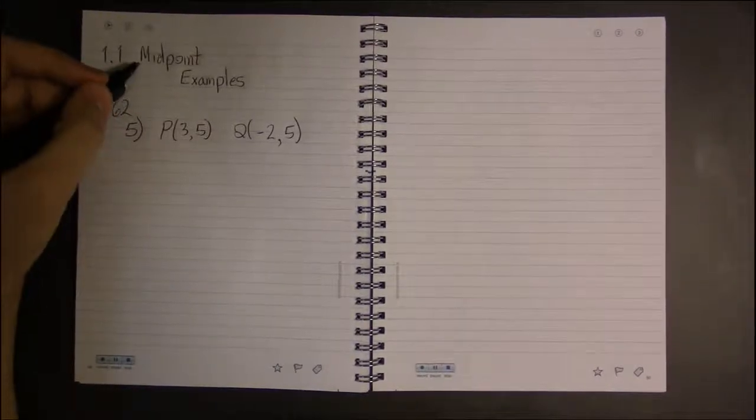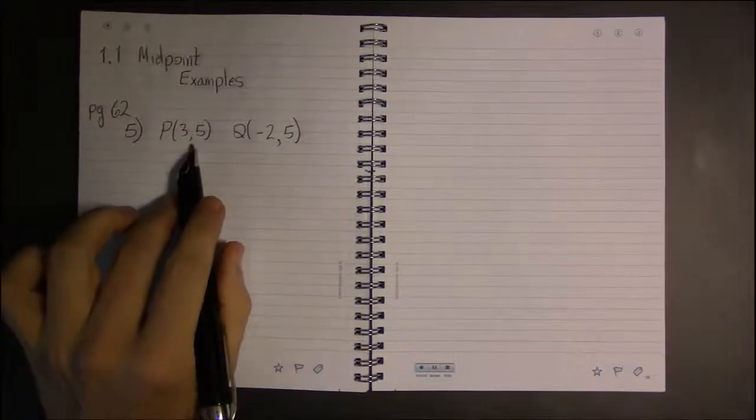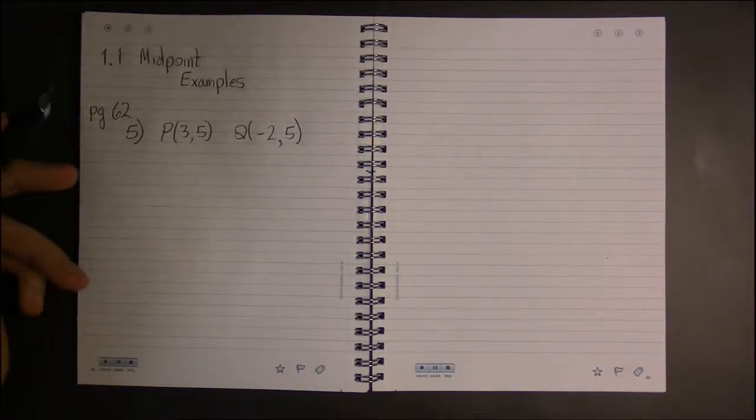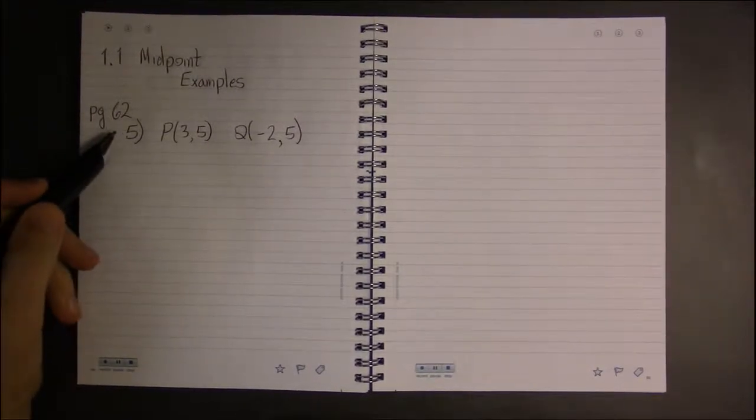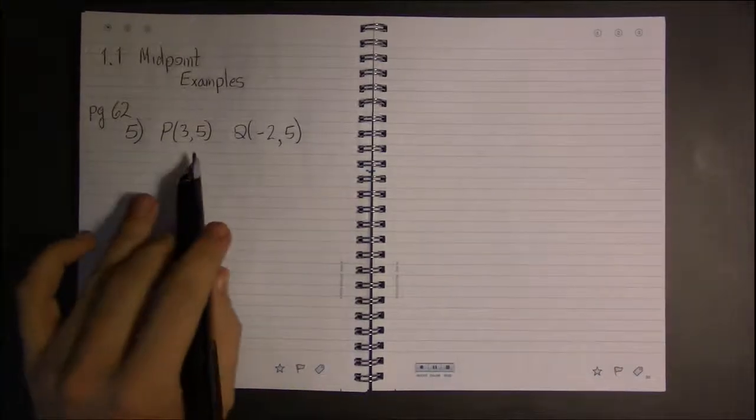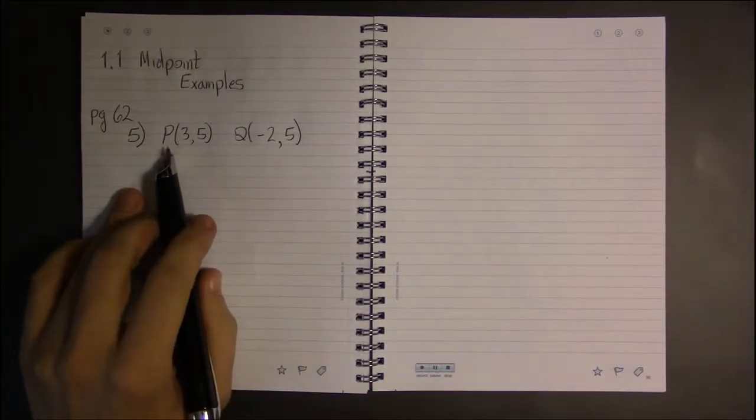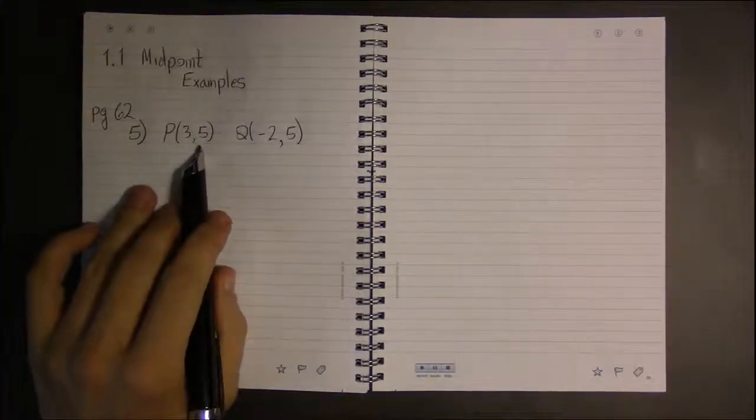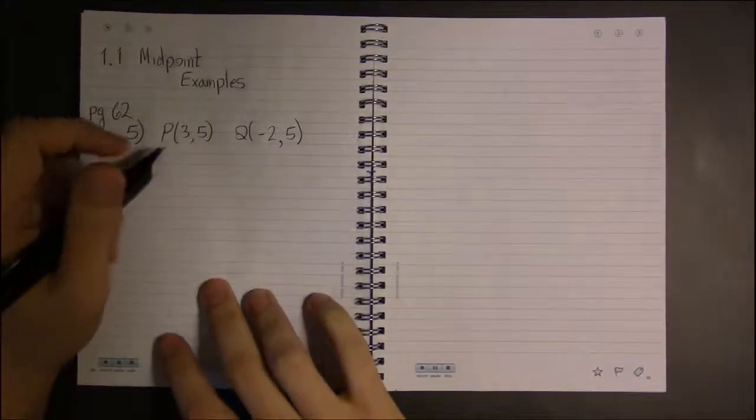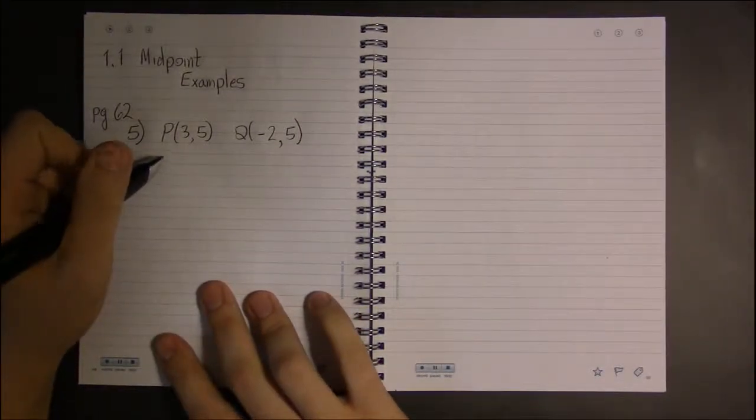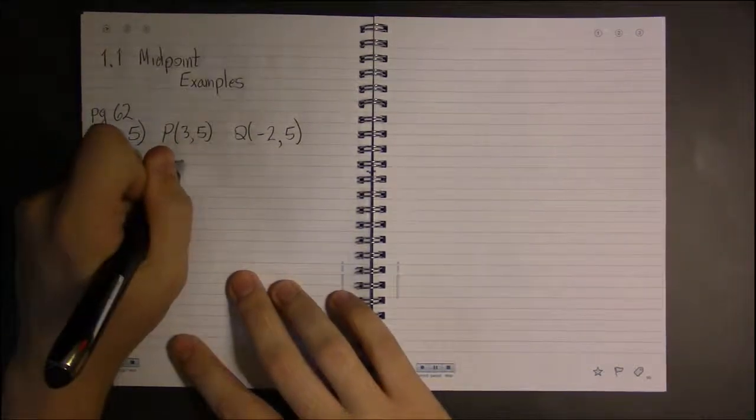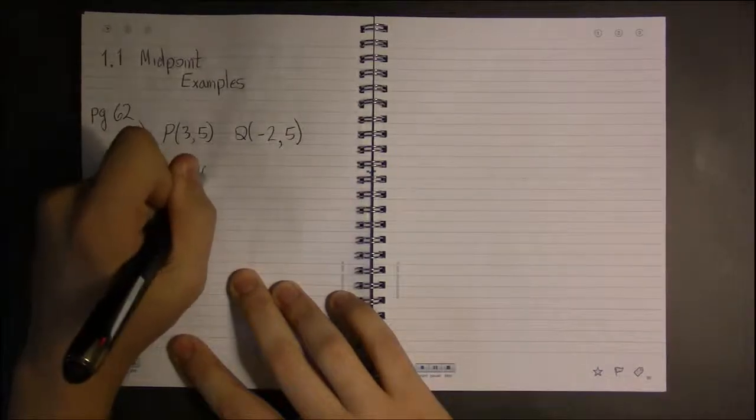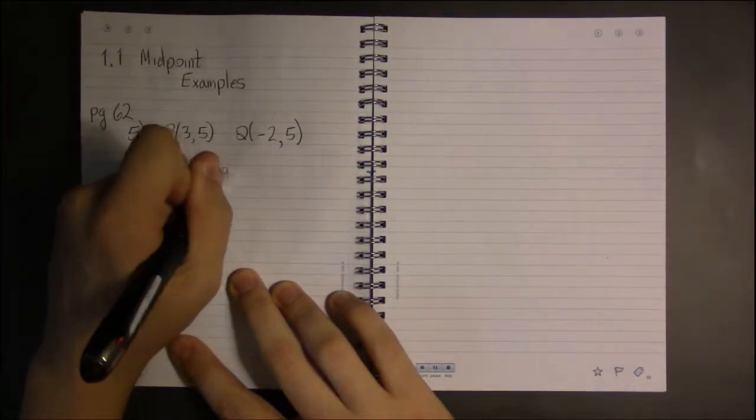Let's take a look at some examples of computing midpoints between two points. In section 1.1, I'm looking at page 62, problem number 5. We have P being (3,5) and Q being (-2,5).